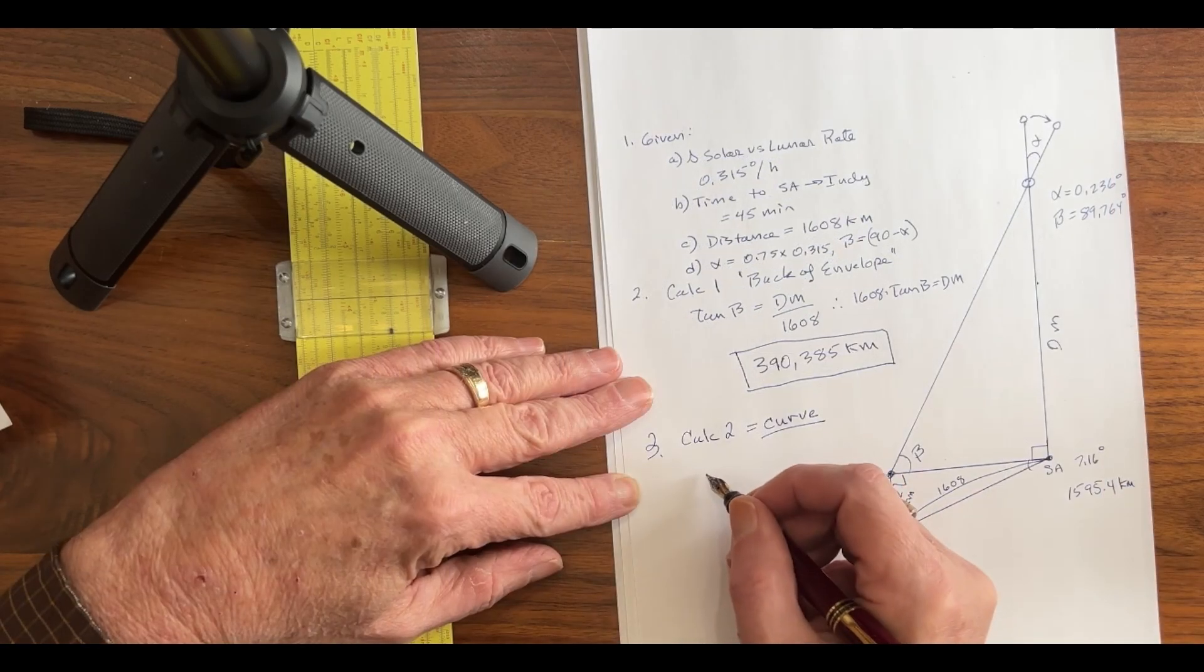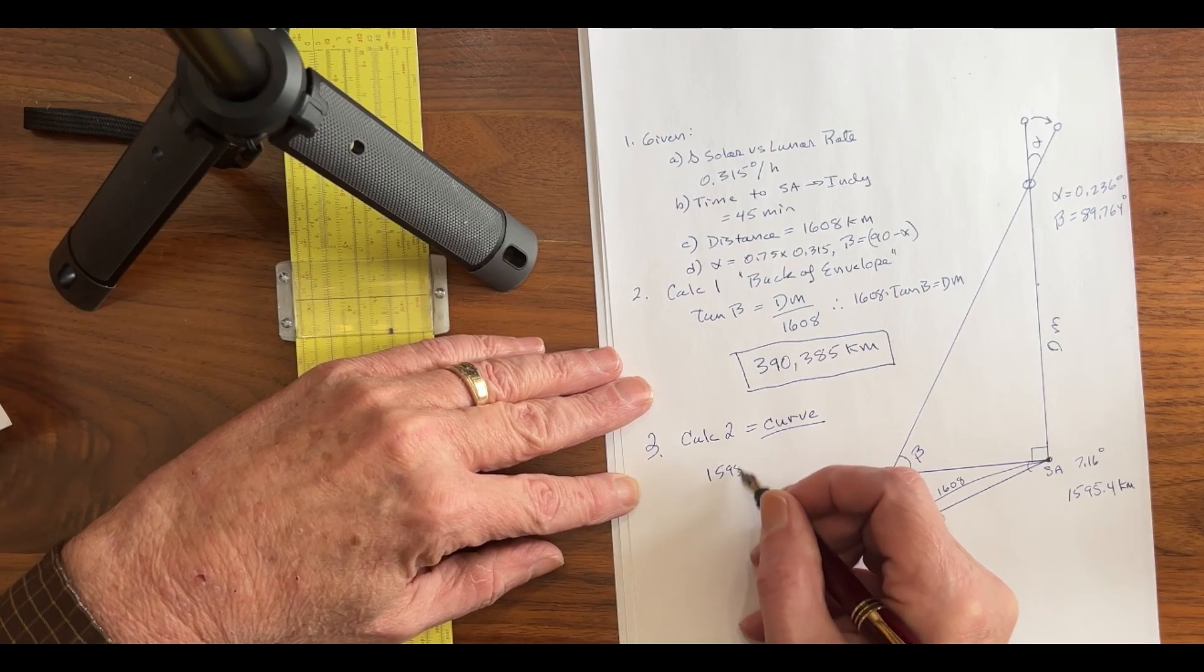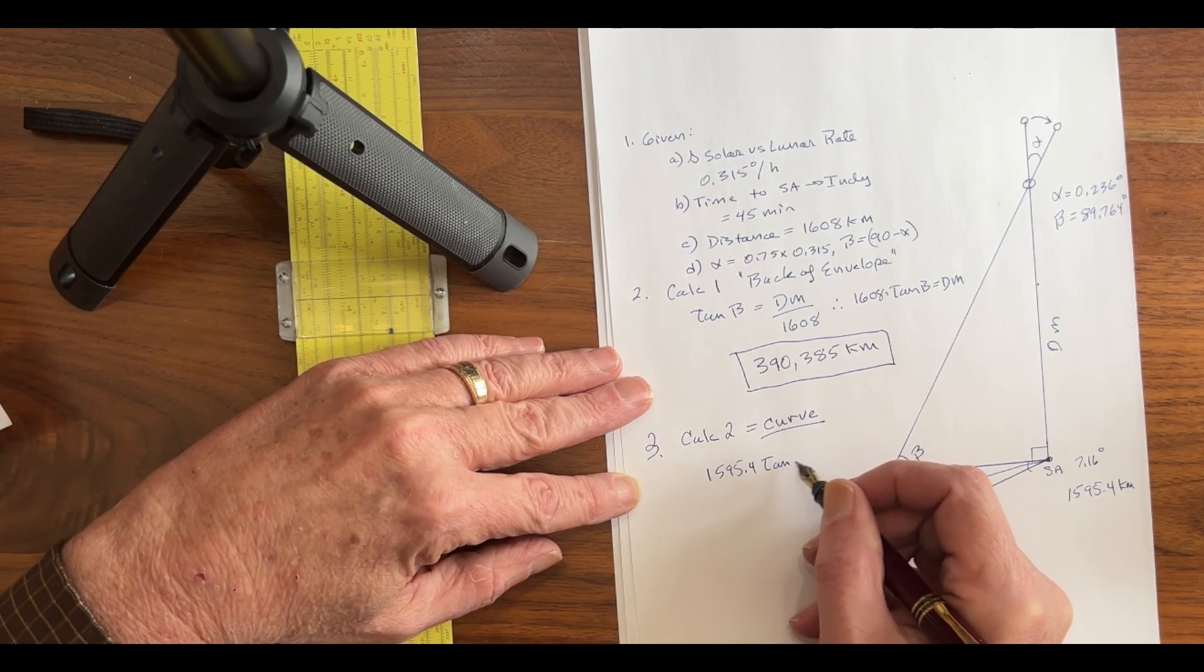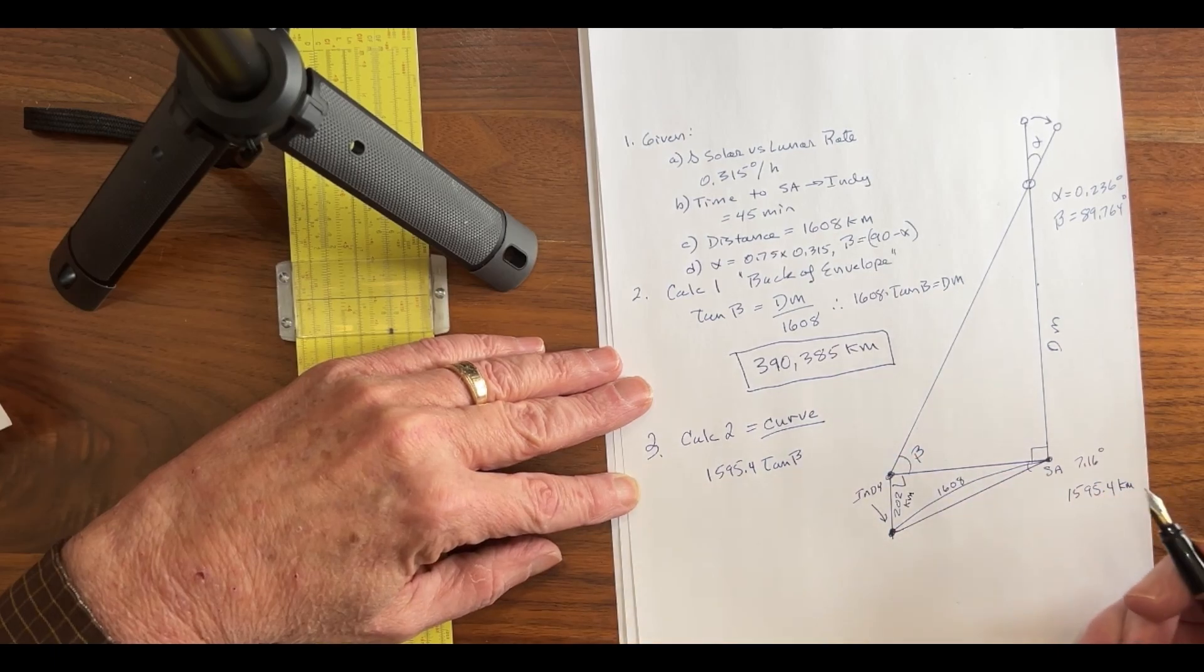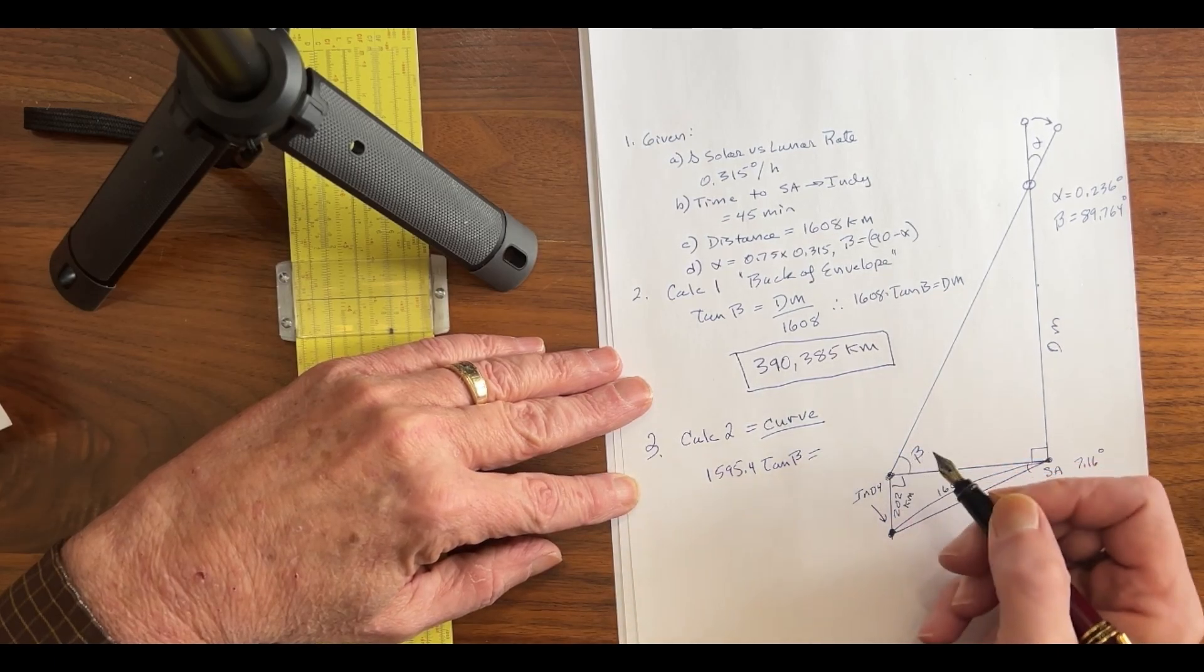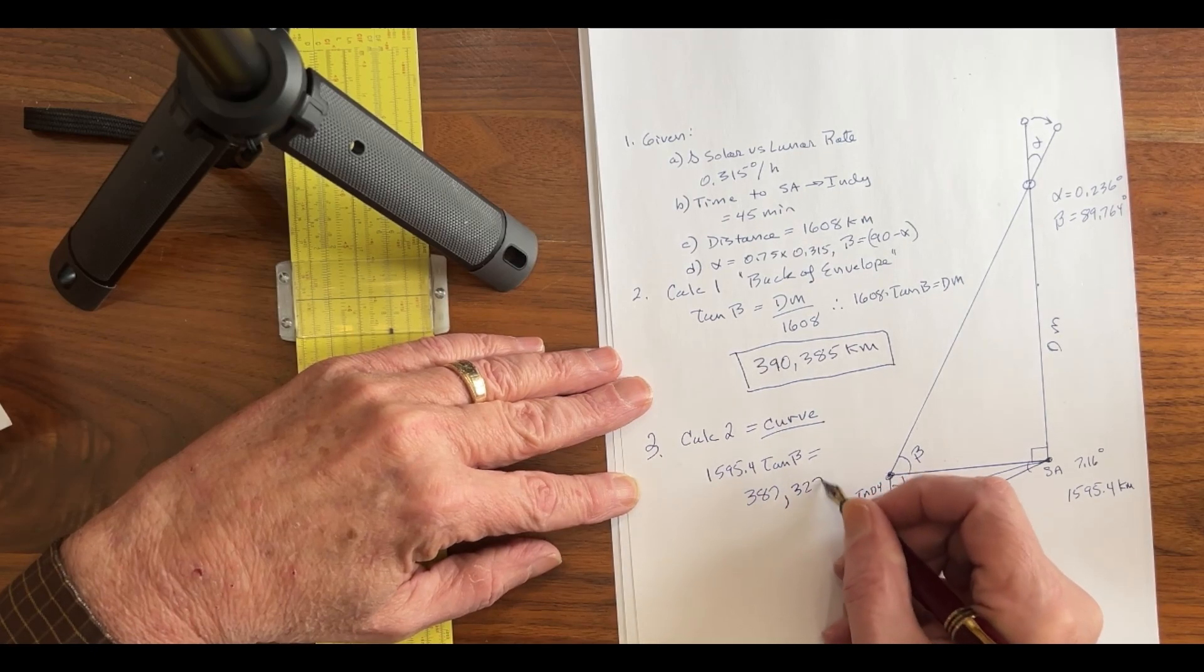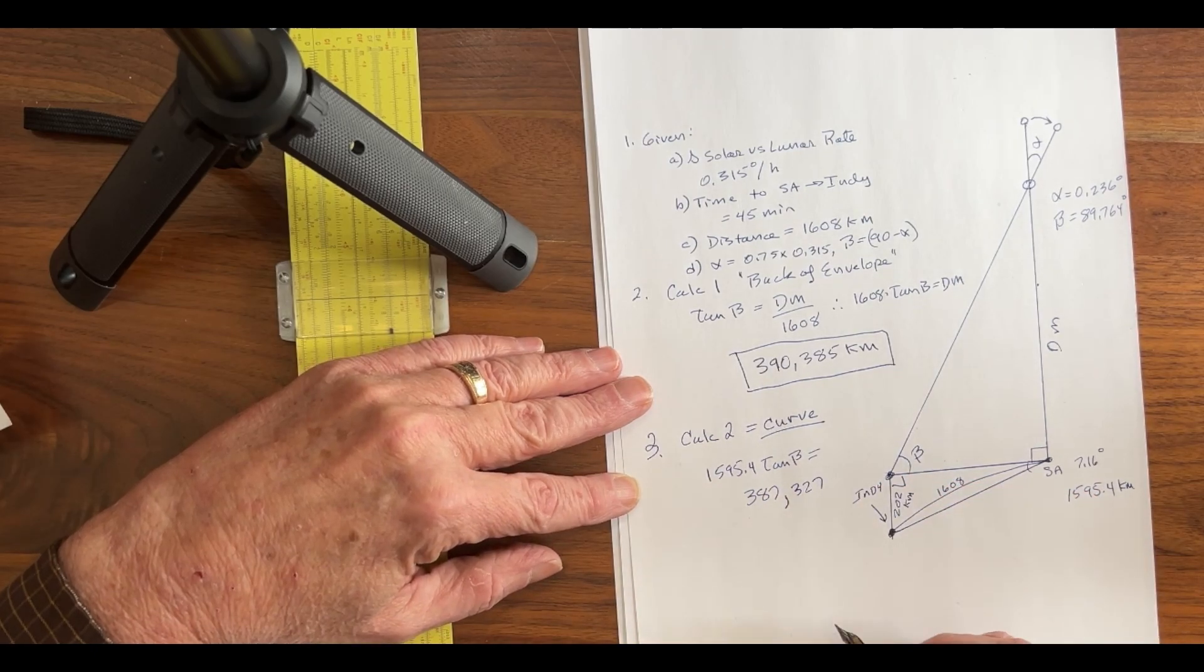So, we have 1595.4 times the tangent of beta, which, again, is right there, equals what? 387,327 kilometers. We're getting a little bit closer.